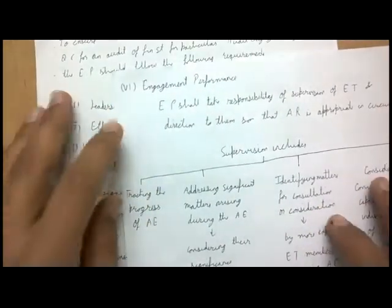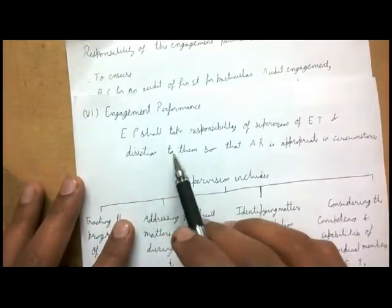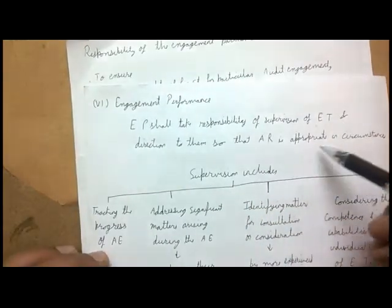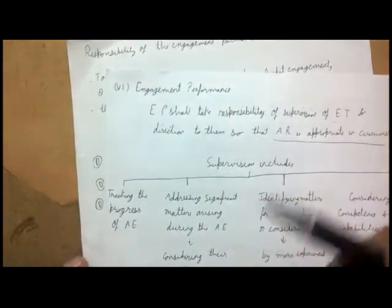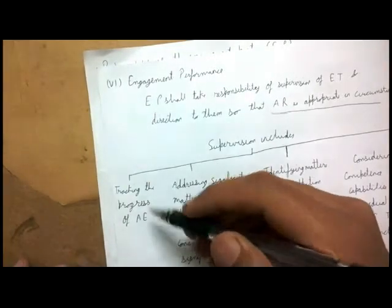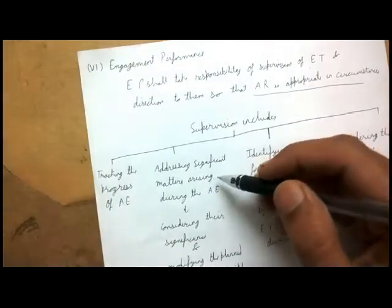Engagement performance relates to supervision: the engagement partner shall take responsibility for supervising the engagement team and directing them so that the audit report is appropriate. He accepts responsibility for supervision. He tracks the progress of the audit engagement — what areas have been audited, what is left, and what percentage of work has been completed.